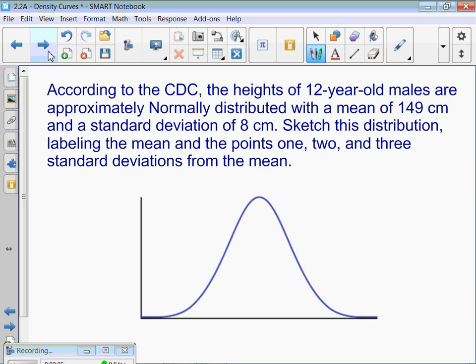Here's another example of something that's normally distributed. According to the CDC, the heights of 12-year-old males are approximately normally distributed with a mean of 149 centimeters and a standard deviation of 8 centimeters. Sketch this distribution, labeling the mean and the points 1, 2, and 3 standard deviations from the mean.